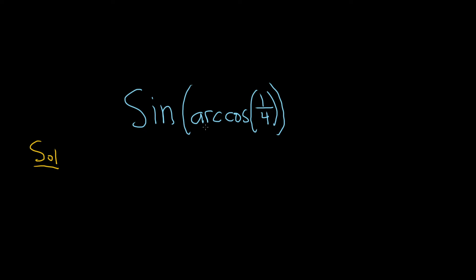Solution. So the arc cosine of 1/4 is not like a familiar angle to me. So what we'll do is we'll start by calling this piece theta. So I'm going to let theta be equal to the arc cosine of 1 over 4.